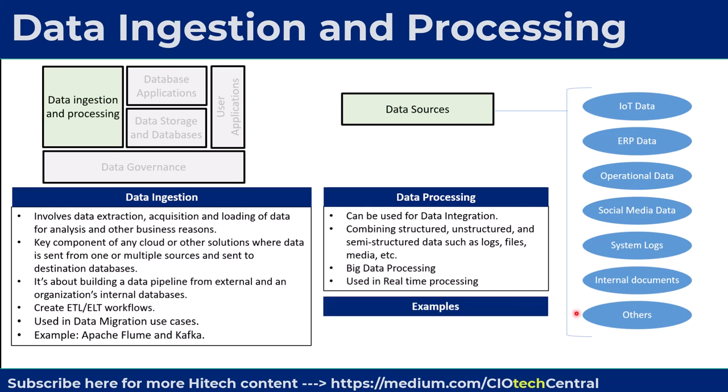Examples of cloud-based tools that help establish data ingestion pipelines and process data include Apache Kafka, Apache Flume, Apache Spark, Google's Cloud Data Fusion, and others.